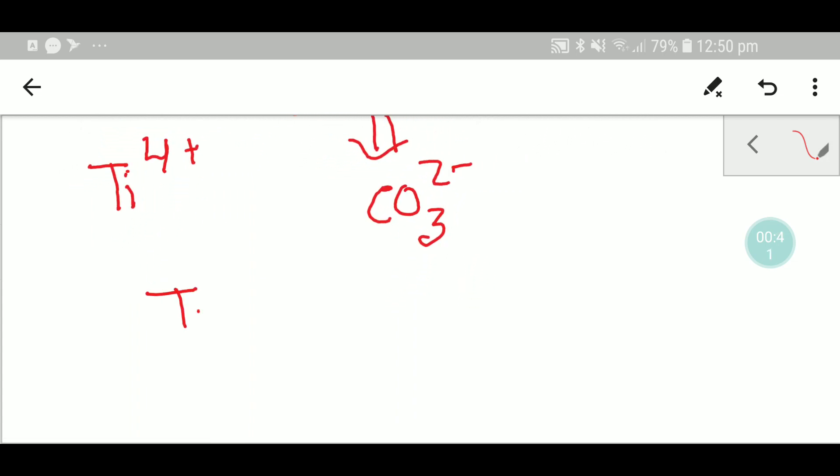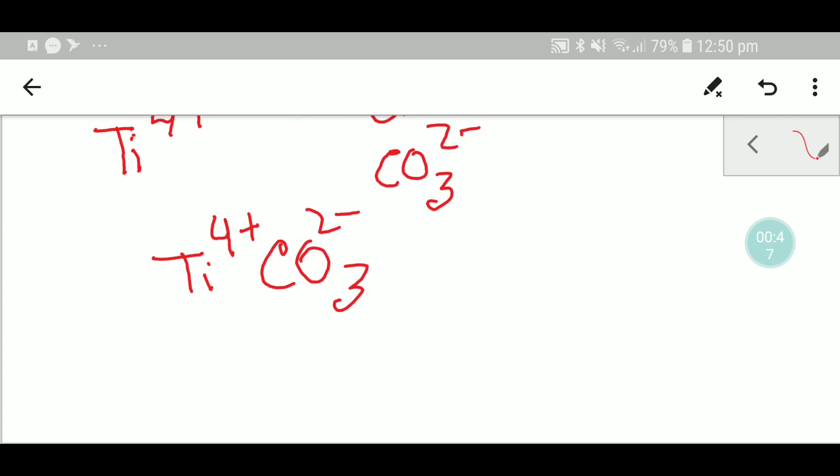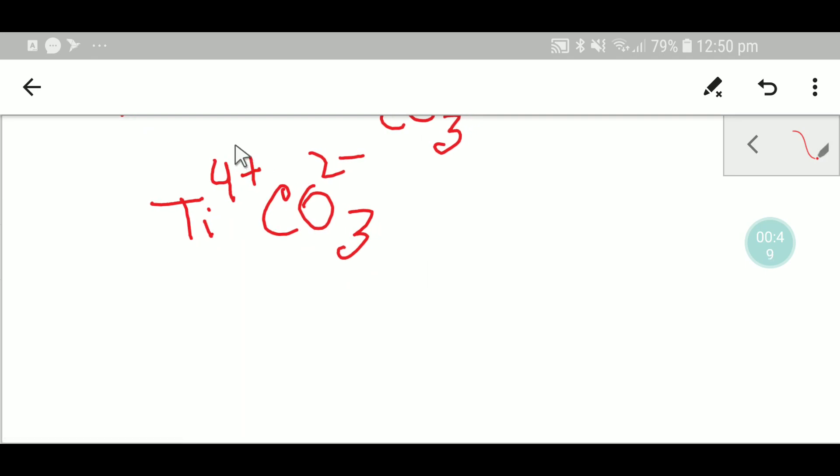Now in the second step, you have to write the two ions side by side so that you can balance the number of positive and negative charges. So now apply your common sense. How can you balance the positive and negative charge?